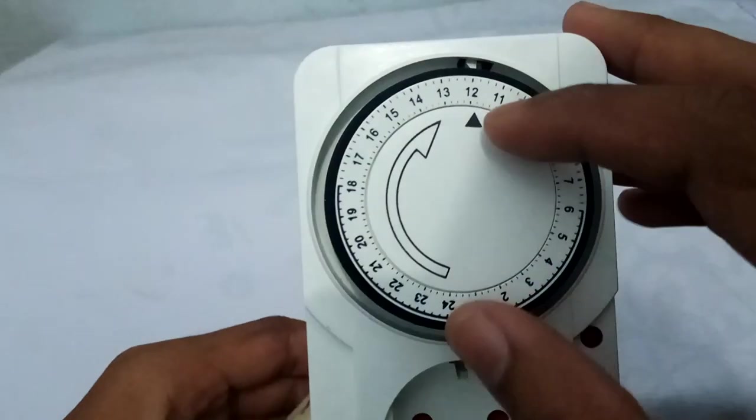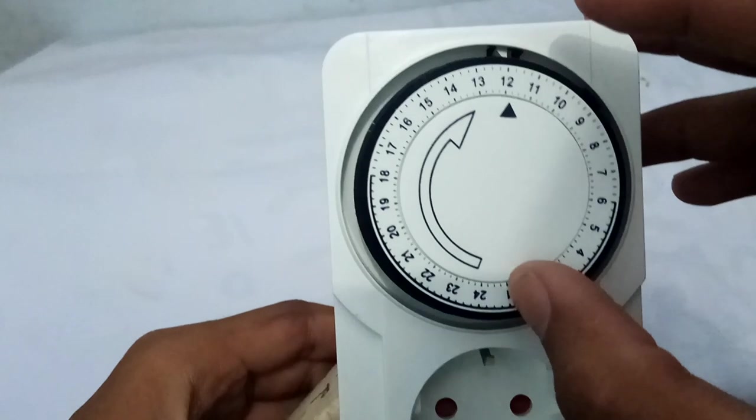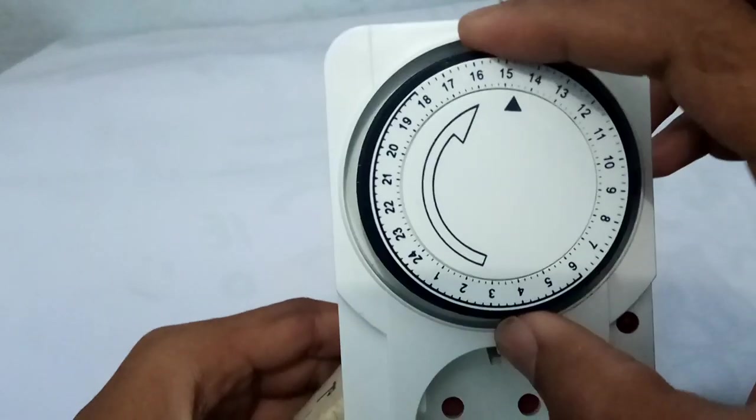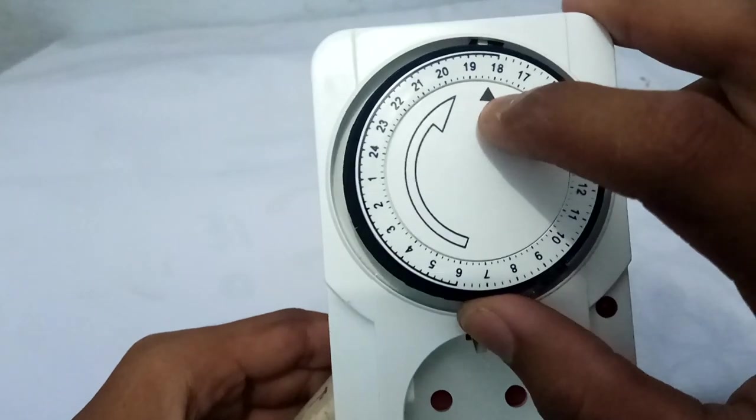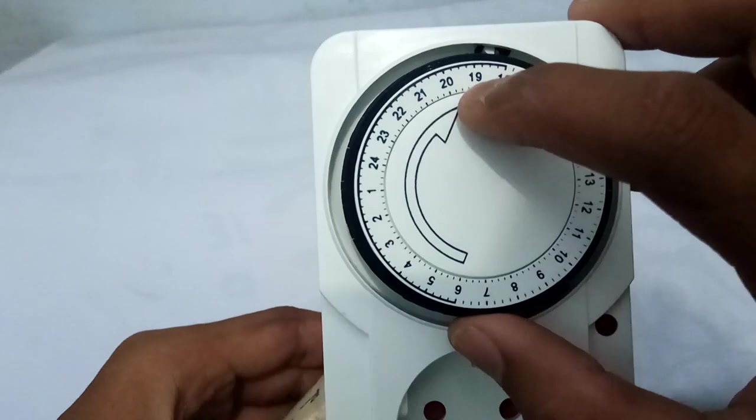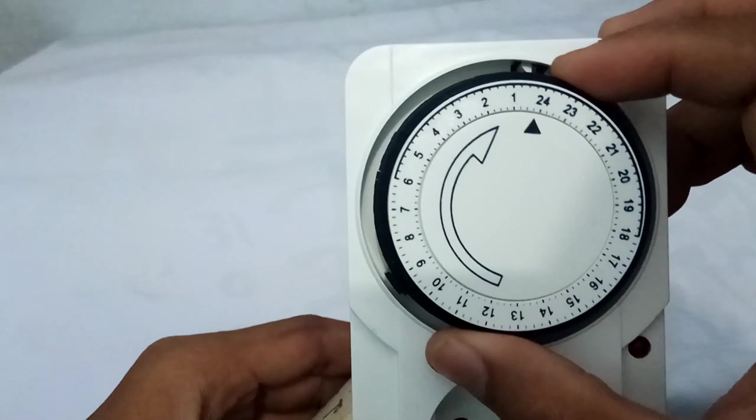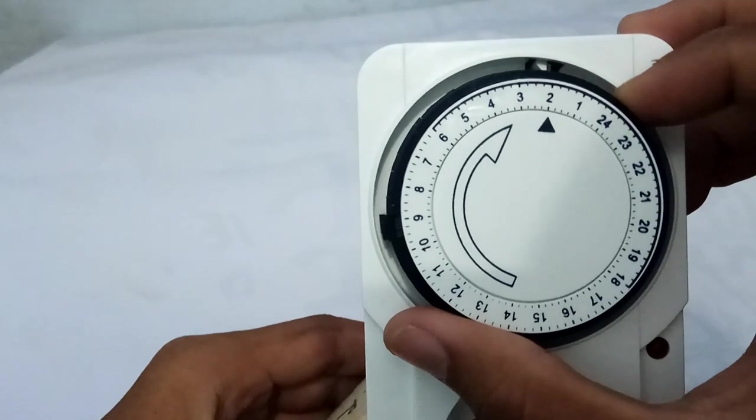And this one you can see, this is the clock pointer. It's 1, 2, 3 till 24. And this black point here, it shows the time, the clock, like this one. This one is at 2, 2 a.m., 2 in the morning.